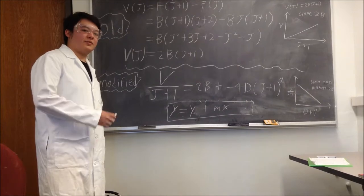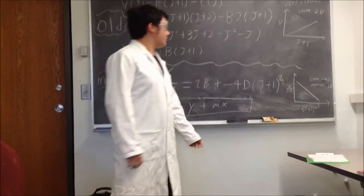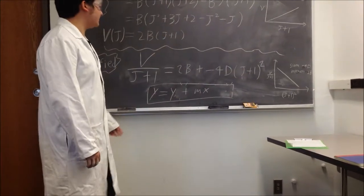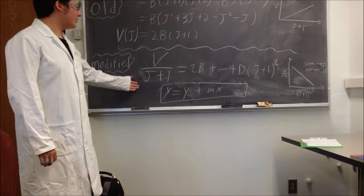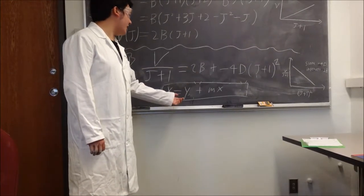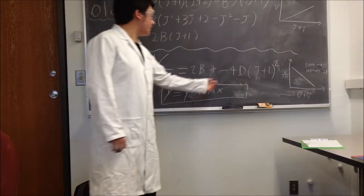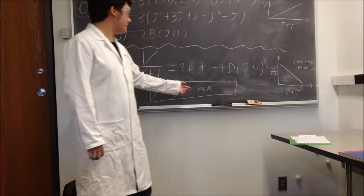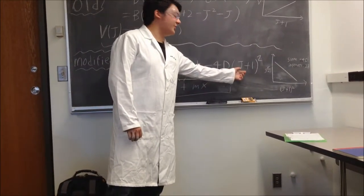I modified the previous transitional frequency equation to match more with what we're talking about in the graph. We have the frequency over J plus 1 equaling this equation, where 2B is the y-intercept, negative 4D is the slope, and the x is simply J plus 1 squared.